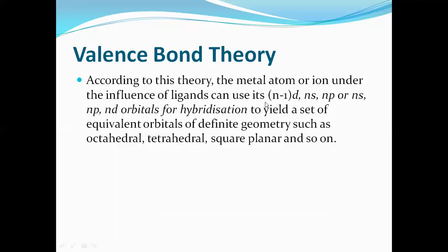If the central metal atom uses its inner d orbital along with valence s and p, it undergoes dsp hybridization — maybe dsp2 or dsp3. If it uses its outer d orbital, then combining ns, np, and nd gives spd, sp2d, sp3d, or sp3d2 hybridization types.